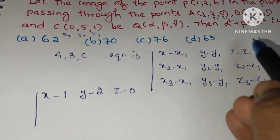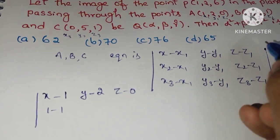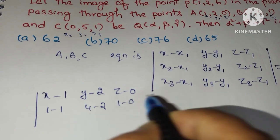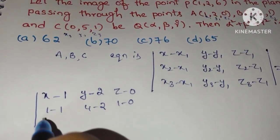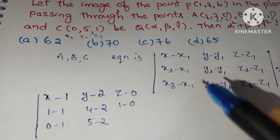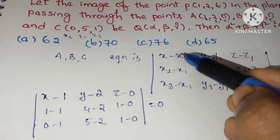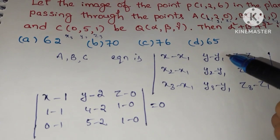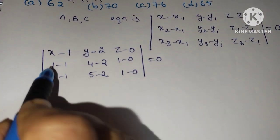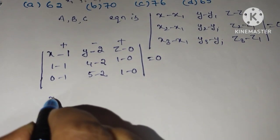For the second row: x2−x1 = 1−1 = 0, y2−y1 = 4−2 = 2, z2−z1 = 1−0 = 1. For the third row: x3−x1 = 0−1 = −1, y3−y1 = 5−2 = 3, z3−z1 = 1−0 = 1. That equals 0. Simplify following the plus-minus-plus pattern, so it is x−1.